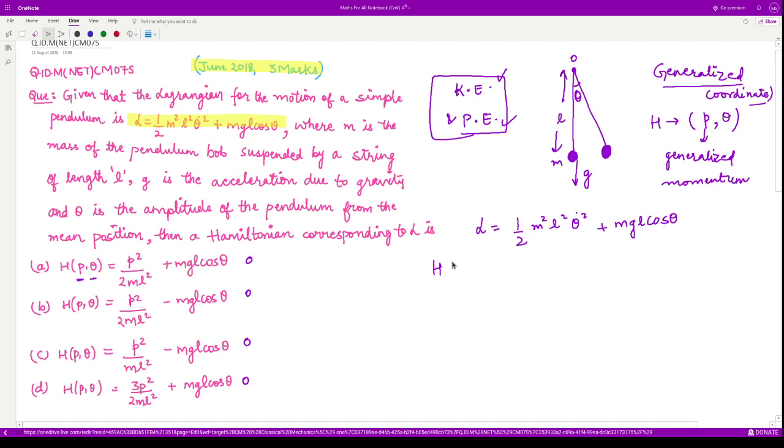So in this question, they are asking what is h? So by definition, this h depending on these two coordinates p and theta is given by this relation summation varying over j, p_j q_j dot minus l. Now here in our case j is only one because we have only one generalized coordinate.